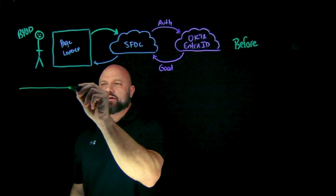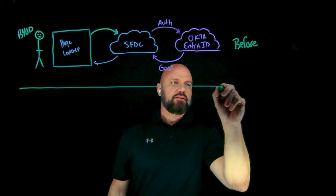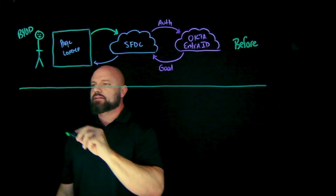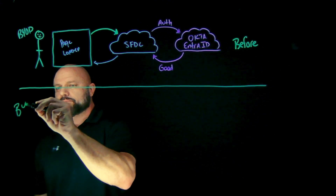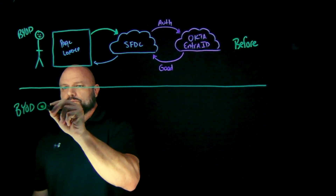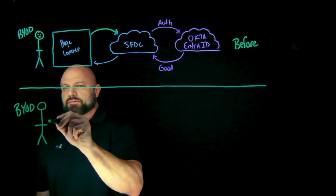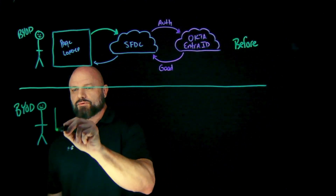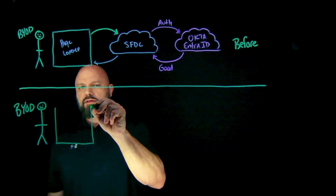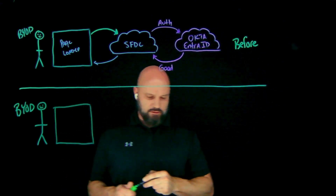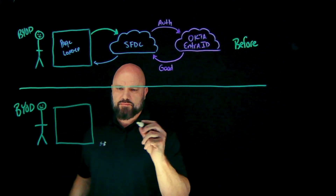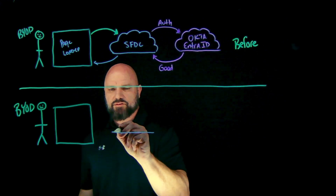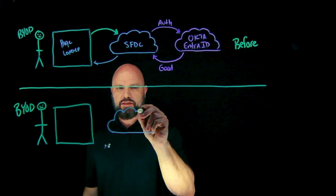The question is: how do you secure this without throwing an agent on someone's device? So we'll divide and conquer. This is the 'before' scenario again — same setup. We have a BYOD device, a user coming through, they open up their browser and they're going out to Salesforce.com, Office 365, or whatever SaaS-based application you want to think about.